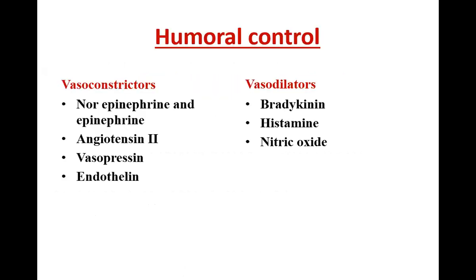Development of collaterals we have already discussed. Now, humoral control: humoral means substances released in the blood which result in a systemic vasoconstrictor or vasodilator effect throughout the circulatory system. The vasodilators are bradykinin, histamine, and nitric oxide — a potent vasodilator. Bradykinin and histamine are vasodilators that also increase capillary permeability and play an important role during inflammation. The major vasoconstrictors are norepinephrine, epinephrine, angiotensin-2, vasopressin, and endothelin.